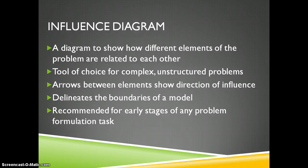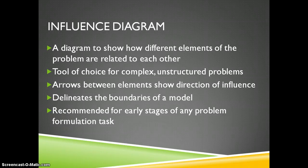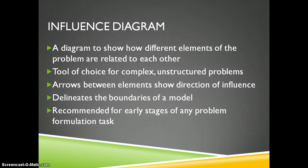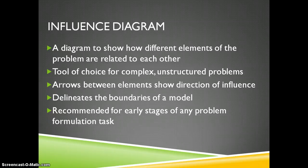For example, revenue will influence profit, but profit doesn't influence revenue, so we draw the arrow going from revenue to profit. The influence diagram also defines the boundaries of our model because we don't include minor details that have no effect on the problem — by definition we're excluding those. The scope of the diagram reflects the scope of the model. Influence diagrams are a lot like flowcharts for software developers: if you're really good at it you can skip them, but it's usually good practice to formulate one.